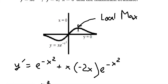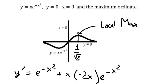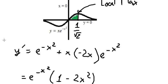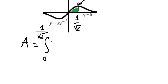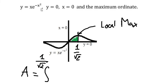After finding this value, we need to set up the area. We need to find the area from x equals zero to the local maximum, which is the maximum ordinate. So we set up the integration from 0 to 1 over the square root of 2, and we put the function in here.